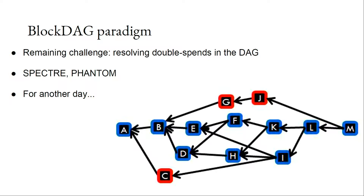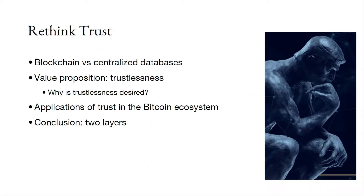This will be the last technical slide for today. In the remaining time, let me outline the key messages I want to talk about: blockchain versus centralized databases, the value proposition of trustlessness, the fact that trust exists in the Bitcoin ecosystem as well, and some conclusions about the two-layer approach.